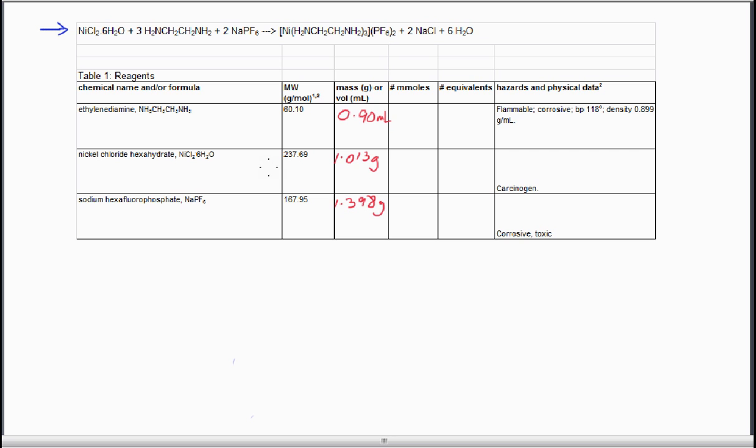The reagent table can be constructed using the master file in Excel that's on the course website, and you can edit out all of the entries that you don't need, leaving the reagents that you actually used. The quantities that we used are the values marked in red. You'll notice that one is in mils and the other two are in grams.